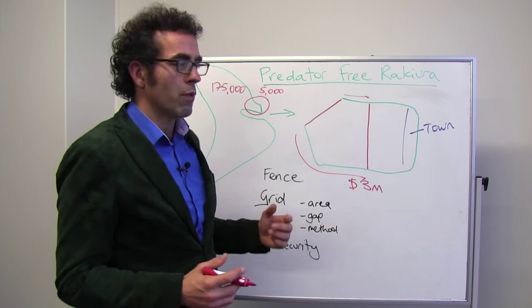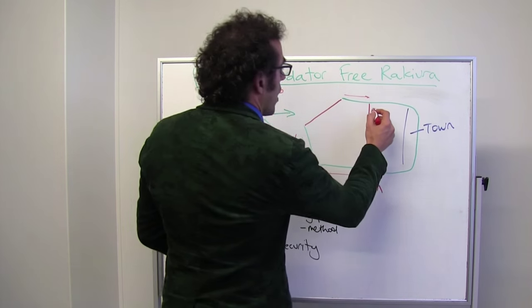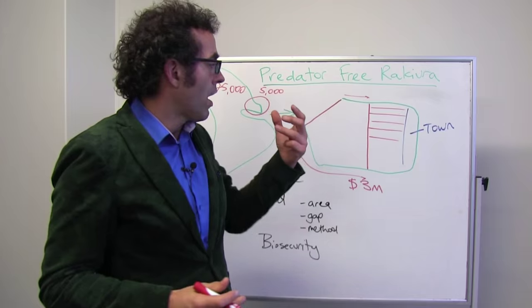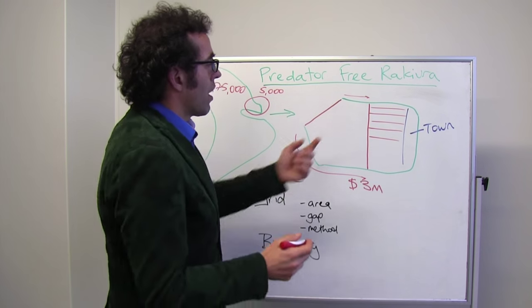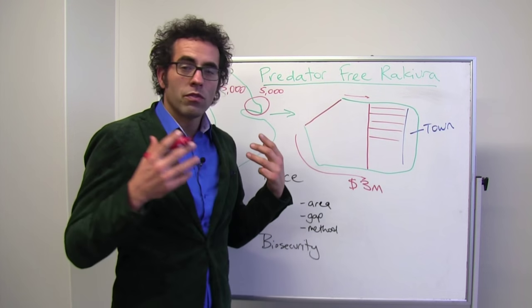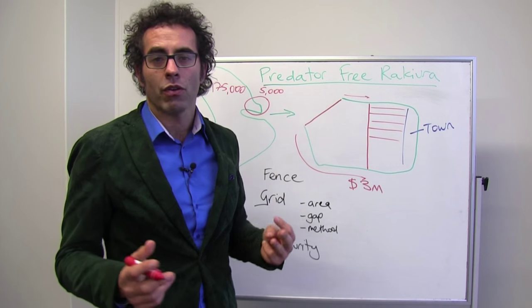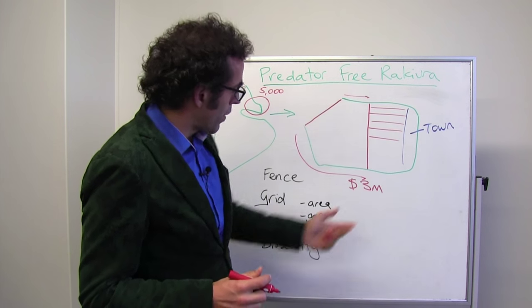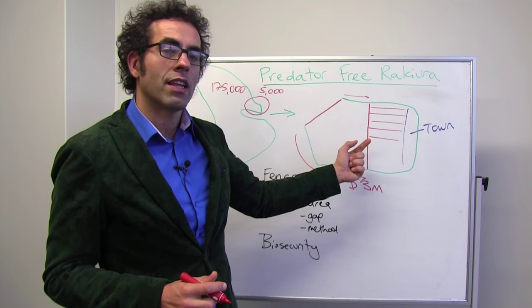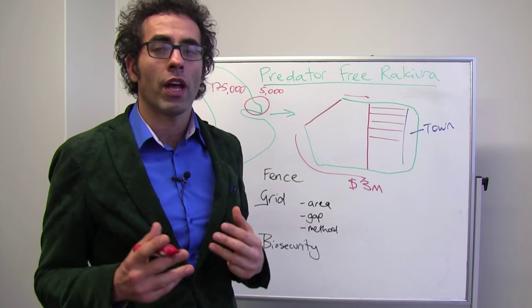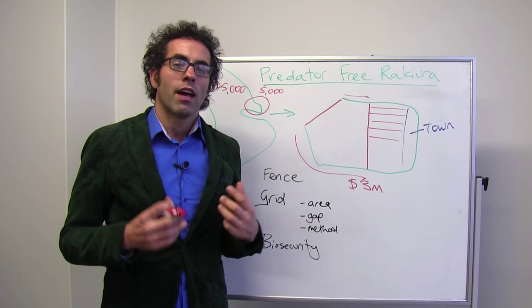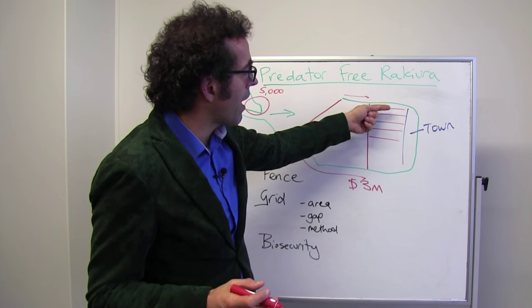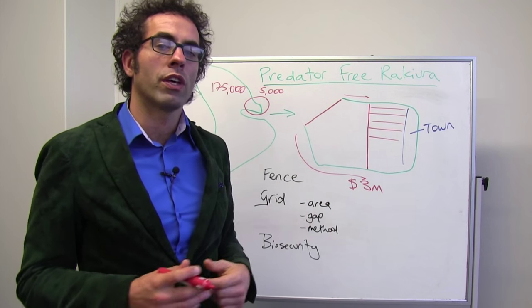Another issue that impacts on the cost is the gap between the predator lines, the size of this grid that we set up. Because within the area that we want to eradicate, we have to create lots of little predator lines. Lines that we go along and we put along either traps or bait stations every few meters to make sure that all of the possums, rats, and feral cats in that area ultimately either get trapped or get poisoned. So the real question here is what's the gap between these lines? Because we have a little critter on Rakiura called the Kiore, which is a Pacific Island rat. It's not as populous as the more well-known ship and Norway rats. And we actually don't know how far apart these grid lines have to be to make sure that all the Kiore get trapped.